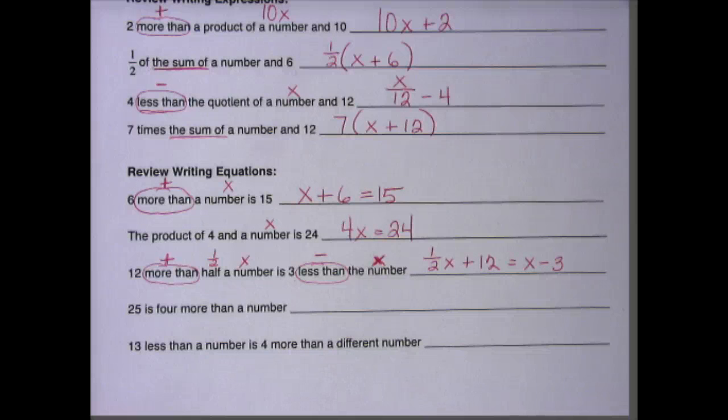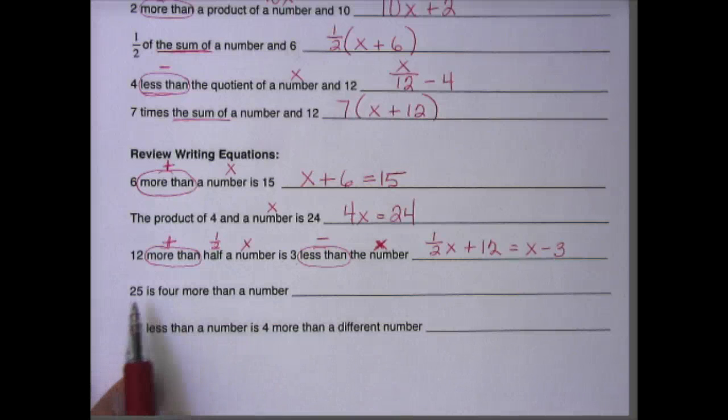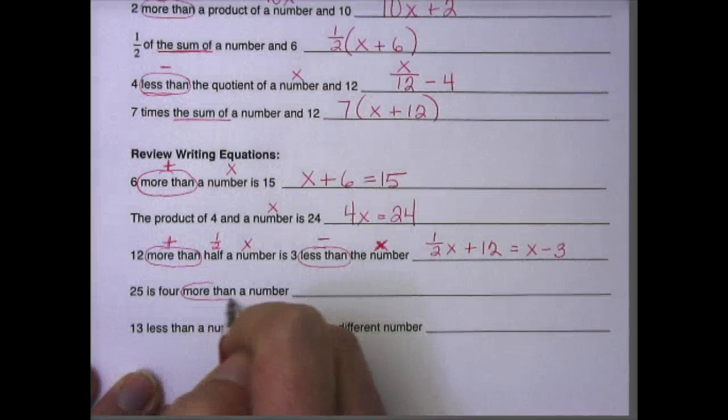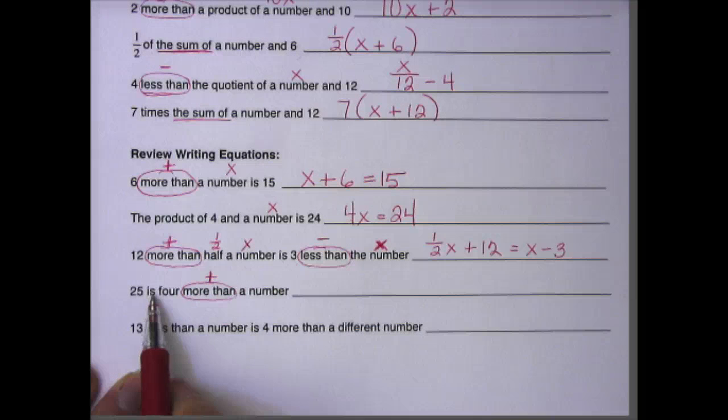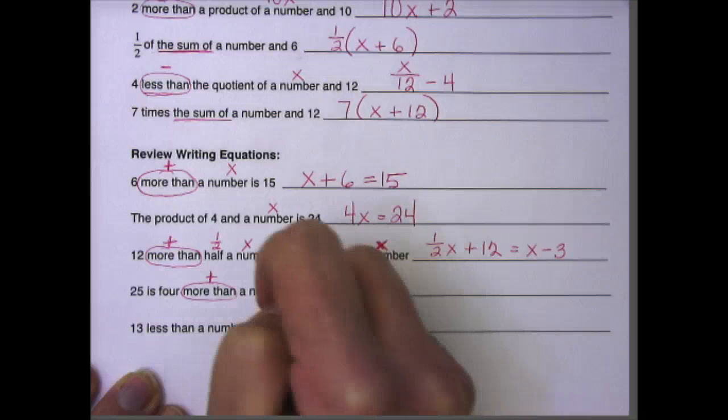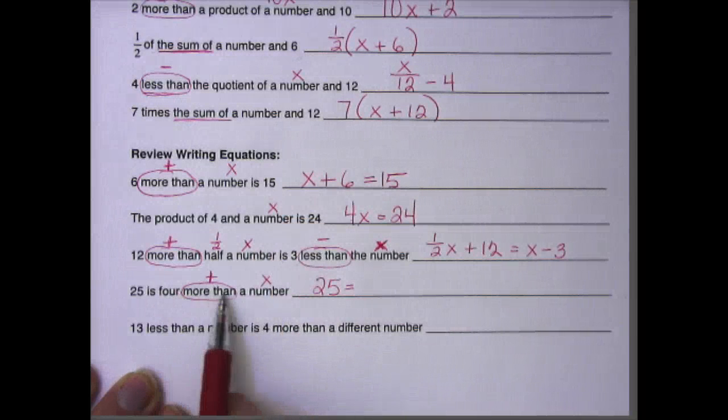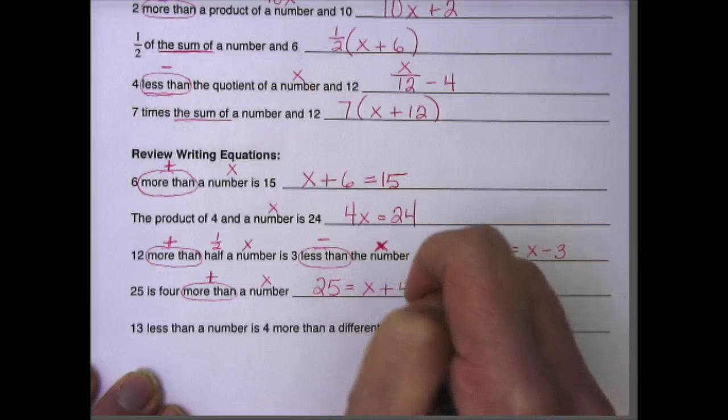So some of these are much harder than the ones we did earlier, at least this one, much harder than the ones we did earlier this year. 25 is 4 more than a number. So turnaround words, but we know they mean add. 25 is 4 more than a number. So 25 is, we've got to turn this around on this side of the equation, so x + 4.